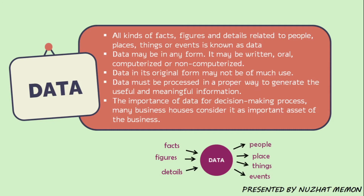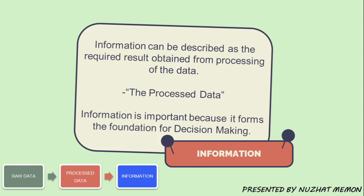Telecommunications does the same — it sells your data to concerned parties at a higher price; for example, selling your contact details so you receive promotional emails or unnecessary calls. Information can be described as the required result obtained from the processing of data, also known as processed data. Information is important because it forms the foundation for decision making.